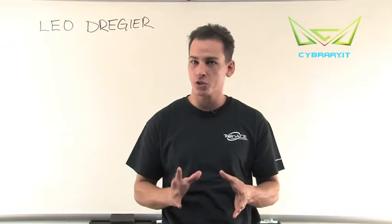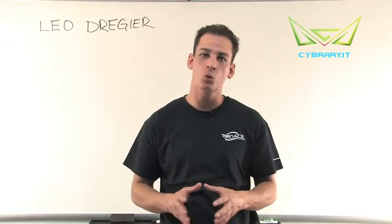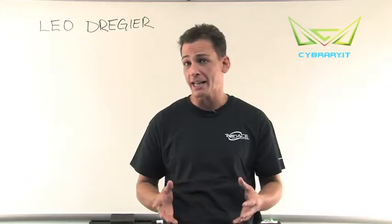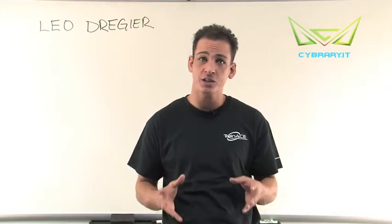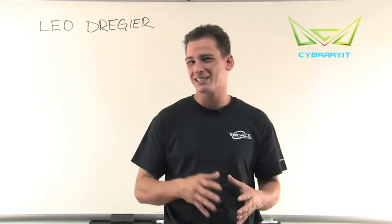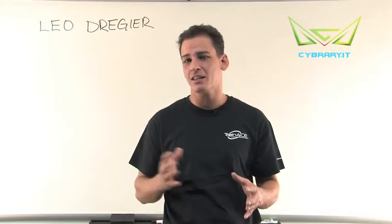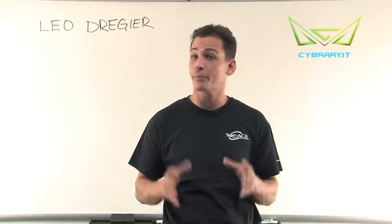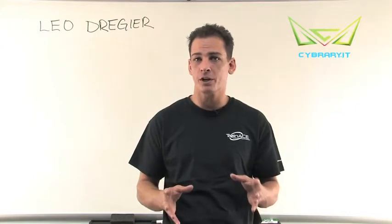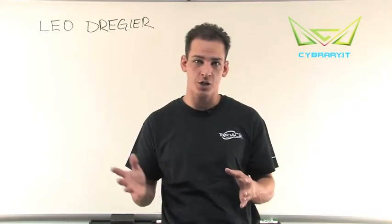Leo Dreger here. I want to talk about Module 6, which is Trojans and Backdoors. In the last module we talked about gaining access to a system and finally changing the integrity of our targets. But we can extend outside of the hacking lifecycle or the penetration testing lifecycle and really move in an à la carte fashion at this point.